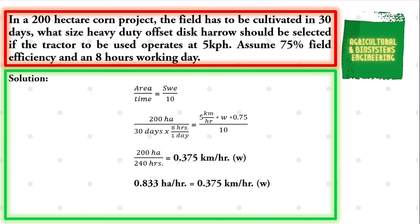We divide both sides of the equation by 0.375 kilometers per hour, and we have a final value for the size of the implement to be 2.22 meters. That is the solution to our problem.